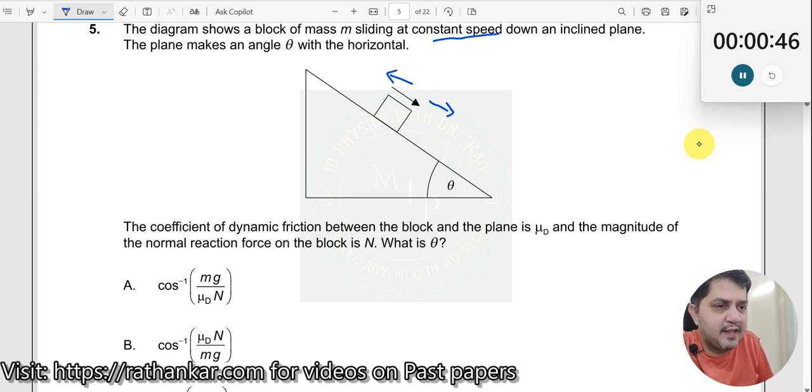What is the downward force? Downward force in an inclined plane is nothing but mg sine theta. And what is the upward force? Nobody is pushing it backwards, no string, but there is a friction here.